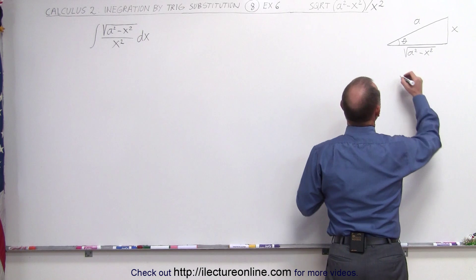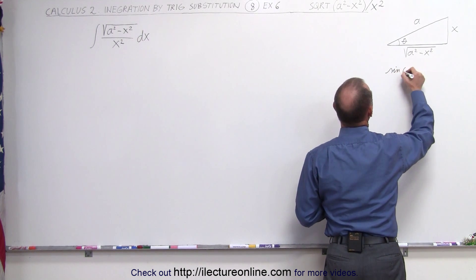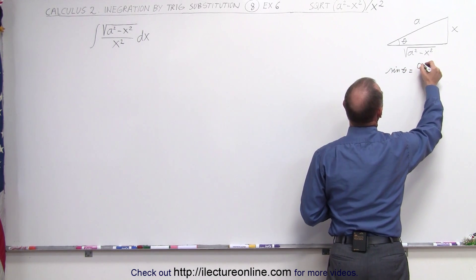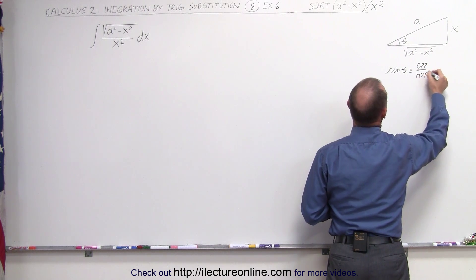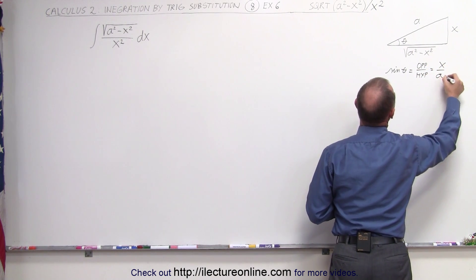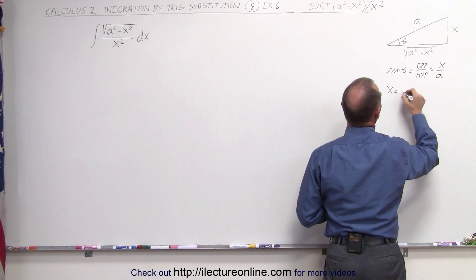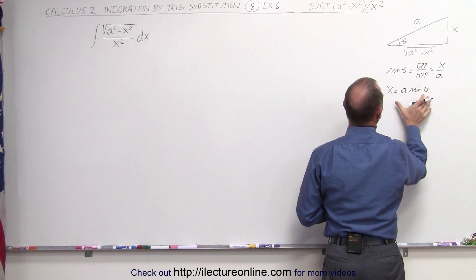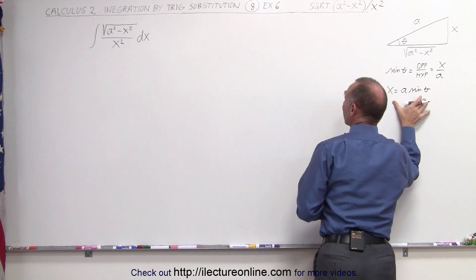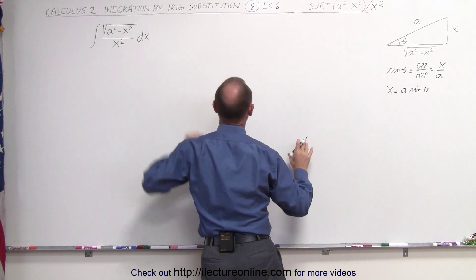Here we can see that the sine of theta, by definition, is equal to the opposite side divided by the hypotenuse, which is equal to x over a. This means that x can be written as a times the sine of theta. We'll use this trig substitution to replace x.